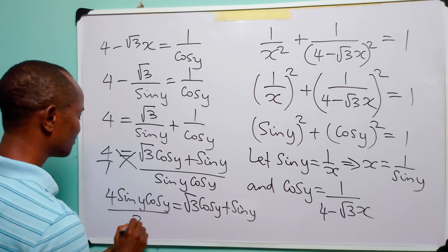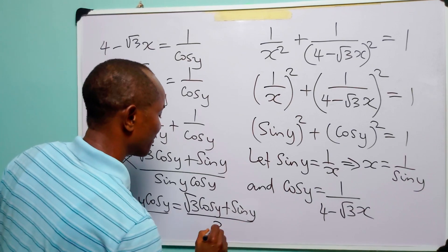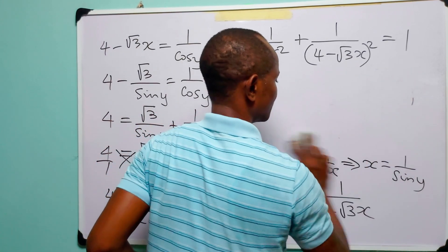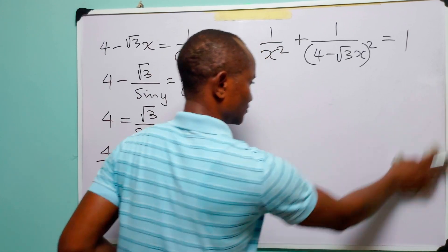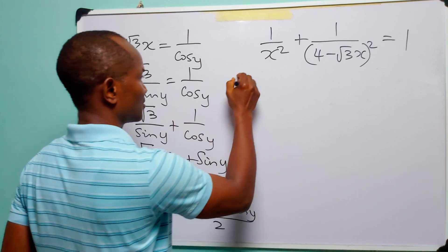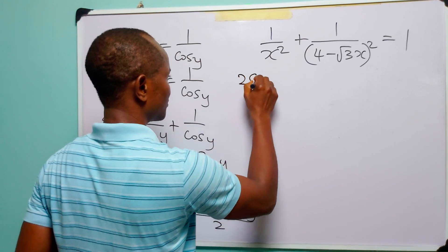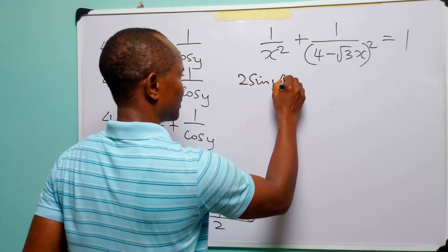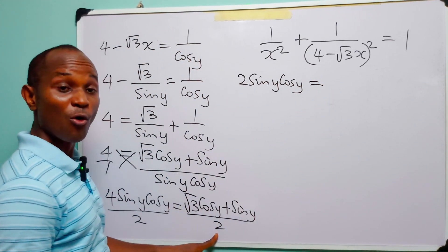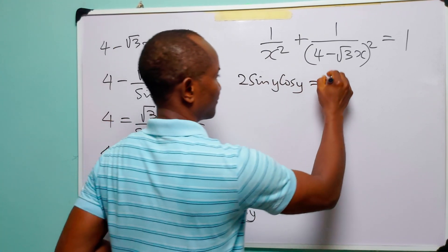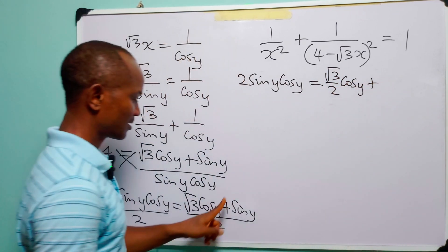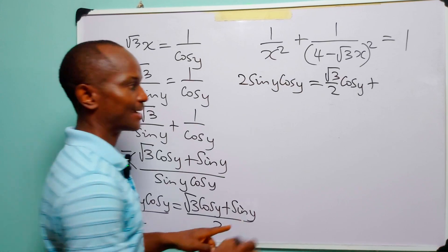The next thing is to divide both sides of this equation by two. From here we have four divided by two is two, so two sin y cos y is equal to root three over two cos y plus one over two sin y.